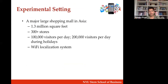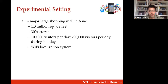We partnered with one of the largest shopping malls in Asia — about 1.3 million square feet with more than 300 stores, getting about 100,000 visitors per day and 200,000 during holidays. We get trajectory data through the Wi-Fi system. The moment a customer walks in, a team with flyers offers access to the Wi-Fi user ID and password, since LTE signal doesn't always work well inside a mall, especially in the basement.